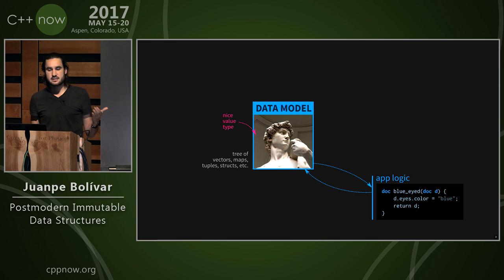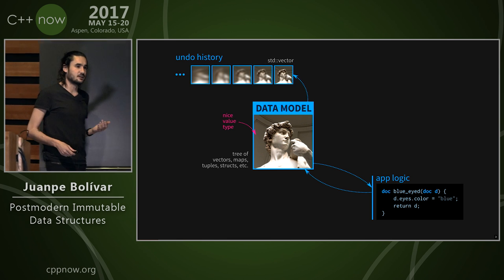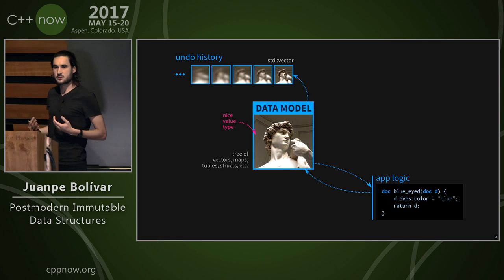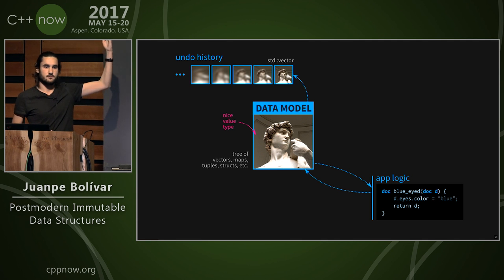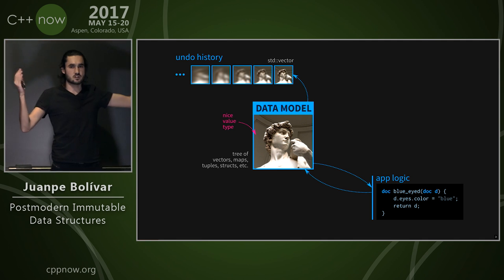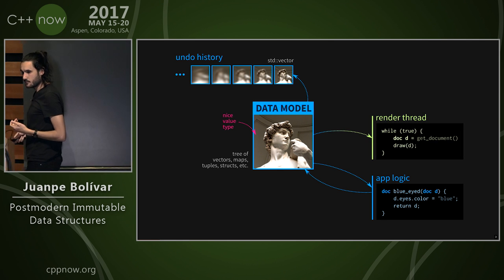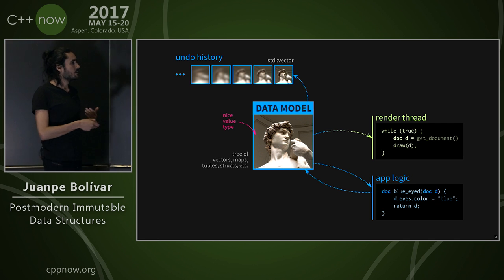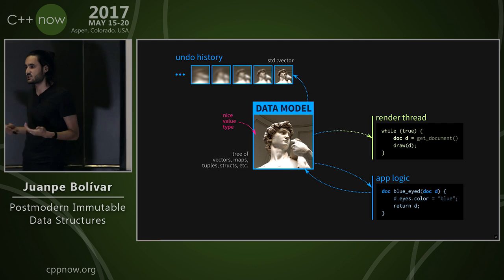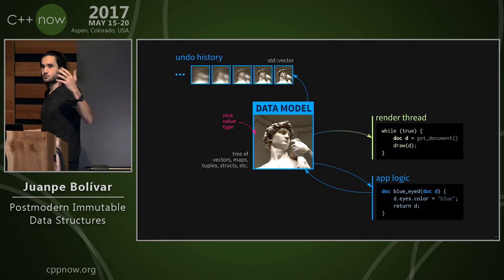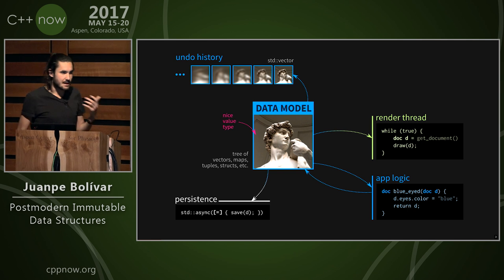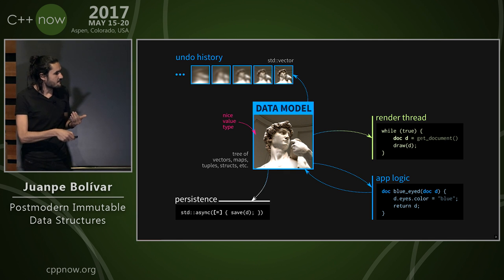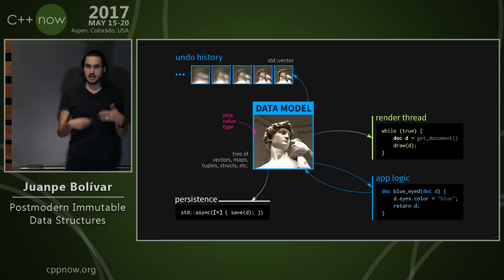This function has no side effects and is really easy to test. One often-advertised advantage of this architecture is that a relatively complicated feature like undo suddenly becomes very simple: you just keep snapshots of your data model in something like an std::vector, and you're done. Doing things asynchronously is equally simple — you can have a render thread that queries through an inter-thread channel a copy of the document and draws it without problem. Similarly, saving the document asynchronously without interrupting the user: you just capture the document by value in a lambda.